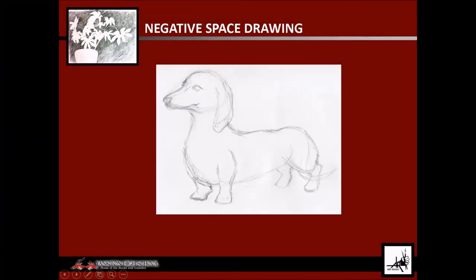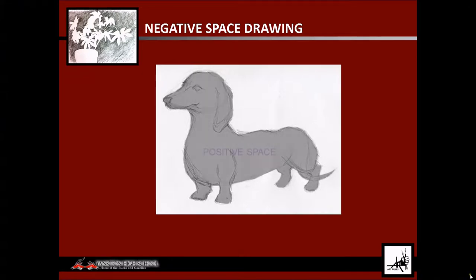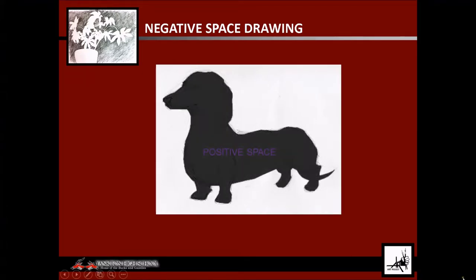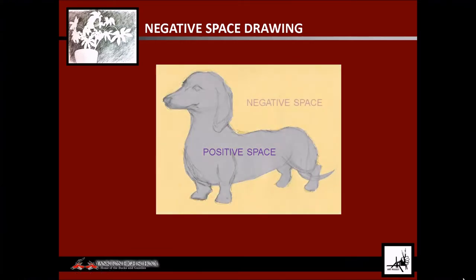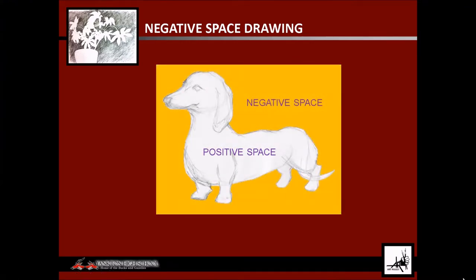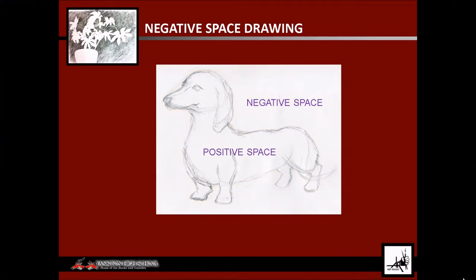Any time you draw one thing, you are actually defining two things: the positive space occupied by the object and the negative space not occupied by the object. I have a good artist friend who really dislikes this terminology, especially the term 'negative space.' Negative has a bad connotation to it — it seems like it is irrelevant or unimportant. His argument is that the negative space is just as important to defining the subject as is the positive space.